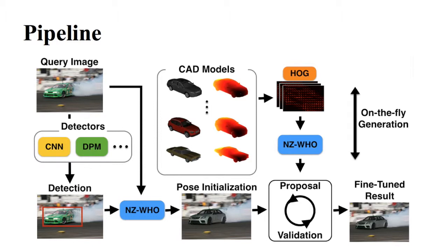Using the pose initialization, we use MCMC to fine-tune the pose. Finally, the system outputs the fine-tuned 2D-3D registration.